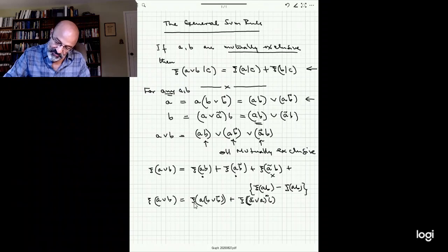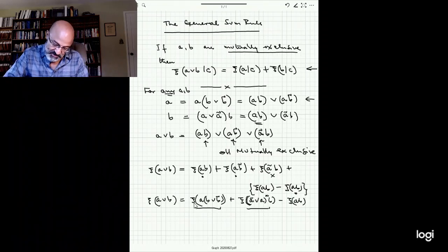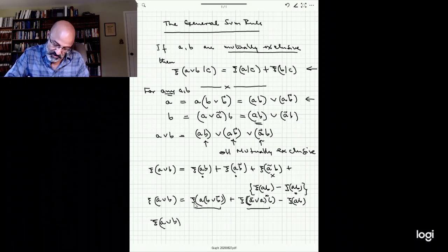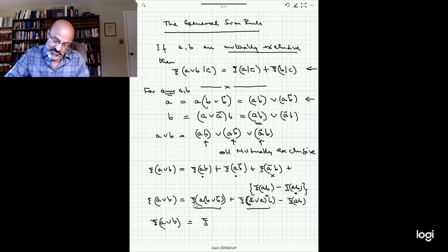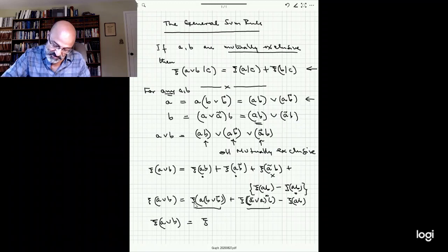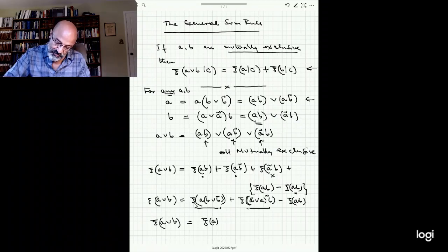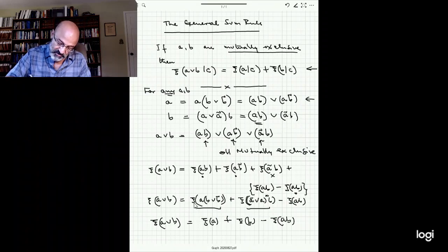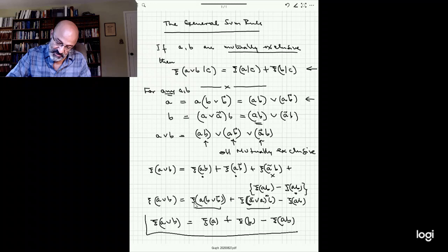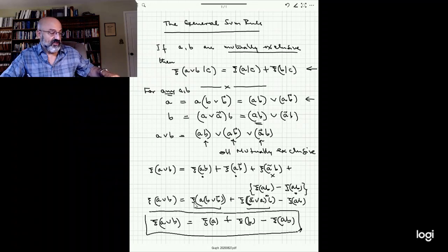And finally, I'm going to write this one here, minus CAB. And when you look at what this is and what that is, it's clear that A or B is equal to the degree of belief in A or B. In the general case in which A and B are not mutually exclusive is the degree of belief in A plus the degree of belief in B minus the degree of belief in A and B. So there we have the general sum rule.